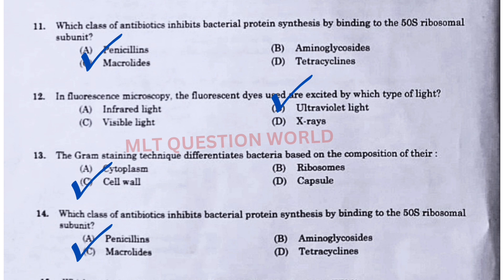Next question: In fluorescent microscopy, the fluorescent dyes used are excited by which type of light? The right answer is option B, ultraviolet. Next question: The gram-staining technique differentiates bacteria based on the composition of the cell wall. The right answer is option C, cell wall.